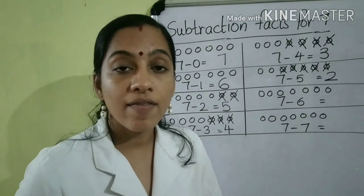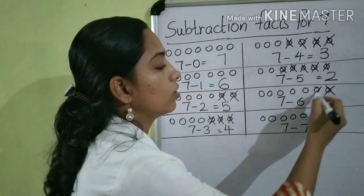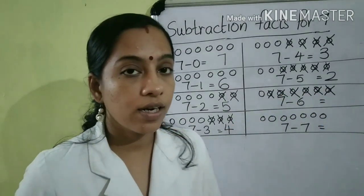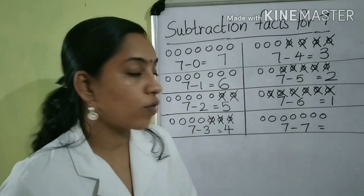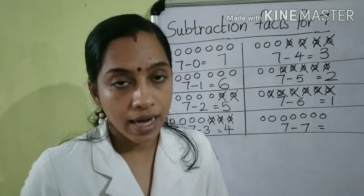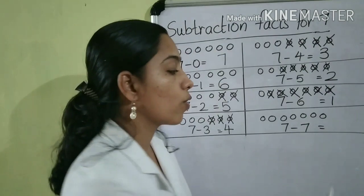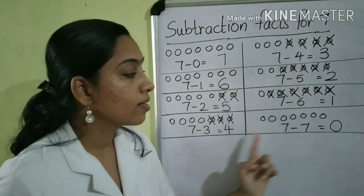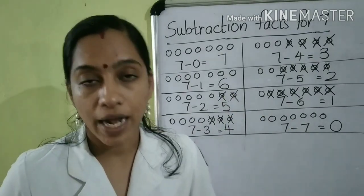Then, 7 minus 6 — cross 6 circles: 1, 2, 3, 4, 5, 6. How many circles are left? Only 1. That is, 7 minus 6 is equal to 1. The last one: 7 minus 7. We know, if any number is subtracted from itself, the answer is 0. So, 7 minus 7 is equal to 0. Is it clear? Children, these are the subtraction facts for 7. The number 7 has 8 subtraction facts.